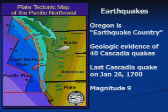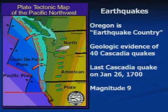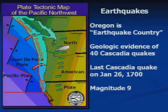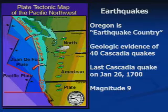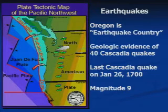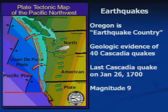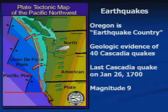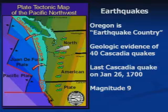The earth is made up of many large plates, and at the boundaries of the plates is a concentration of earthquakes. Here in the Pacific Northwest, we have an oceanic plate called the Juan de Fuca plate that is being shoved under the North American plate. We have geologic records of 40 large Cascadia earthquakes on this fault, called the Cascadia fault, with the last one being about a magnitude 9 on January 26, 1700.